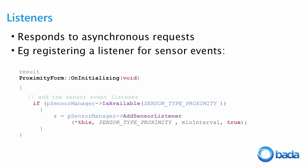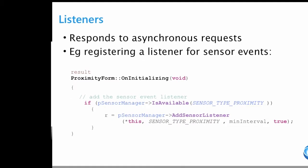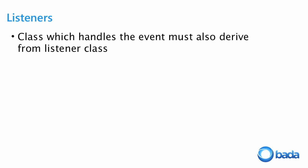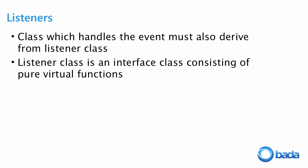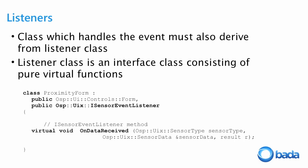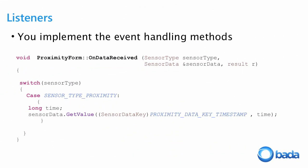How does that work? You can't have known in advance that you wanted to work with a sensor. This is how it's defined: we make sure that our form derives from the sensor listener. The listener classes are interface classes which consist of a bunch of pure virtual functions that you are responsible for implementing. If you have an object that wants to act as a listener, it has to derive from the sensor listener and implement the methods it defines. Here we've only got one method, onDataReceive, which is called whenever there's data from the sensor, and we check the value and do some processing.